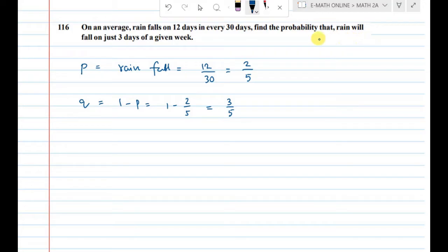In a given week, you will find the probability that rain will fall on just 3 days. Week means 7 days trial, and r value is 3 days.